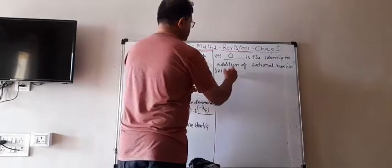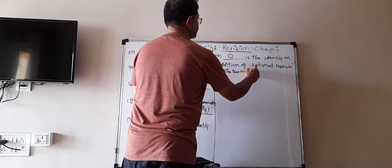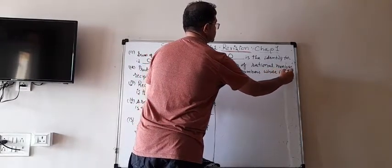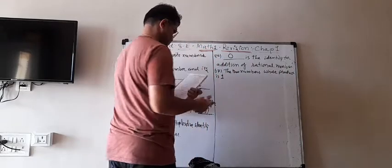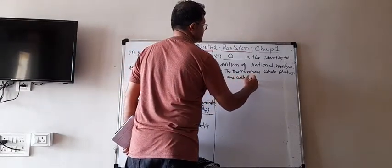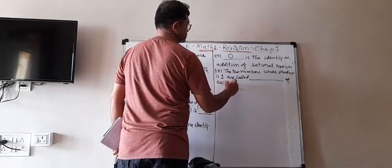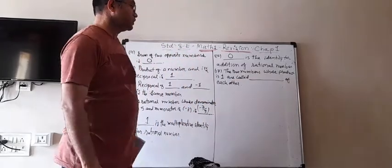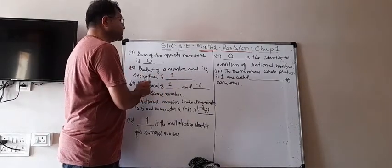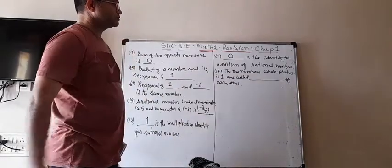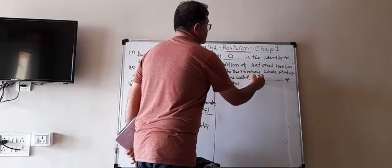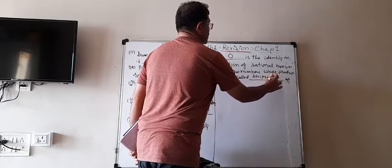Number 17. The two numbers whose product is 1 are called blank of each other. We already covered this: the product of a number and its reciprocal is 1. So they are known as the reciprocal or multiplicative inverse of each other. Whatever you write is the same answer. They are known as the reciprocal of each other.